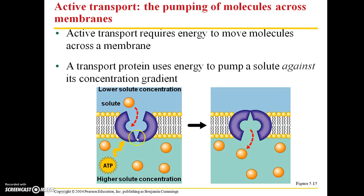A transport protein is going to have to use energy from ATP in order to pump a solute against its concentration gradient. If within the cell there is a higher solute concentration, it's going to require that the transport protein use energy to keep moving that same type of solute into the cell, because naturally that solute is going to want to move outside of the cell — it's going to want to move down its concentration gradient. So in order to get more of that solute into the cell, that transport protein is going to require energy.